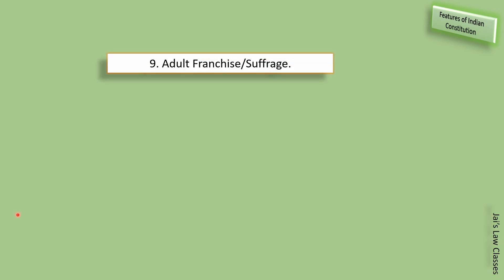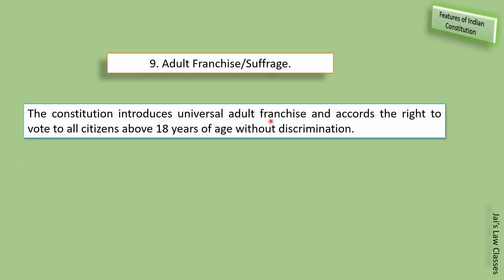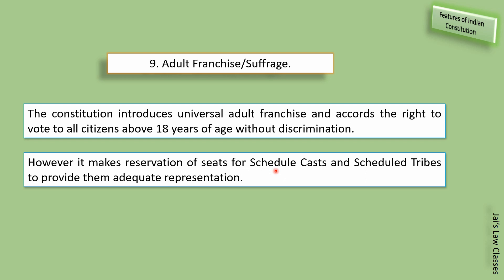Adult franchise is another feature. The constitution introduces adult franchise and accords the right to vote to all citizens above 18 years of age without discrimination. However, it makes a reservation of seats for scheduled castes and scheduled tribes to provide them adequate representation. Koi bhi citizen vote kar sakta hai aur citizen ke votes dwara hi government form ki ja sakti hai. This is a controversial factor, lekin caste system khatam hone ke baad hi ye controversy bhi khatam hogi.